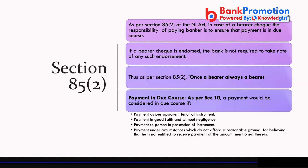As per Section 85 of the Negotiable Instruments Act, in the case of a bearer cheque, the responsibility of the paying banker is to ensure payment is made in due course — meaning there is no reason to believe the person taking money is not entitled to receive it. The banker must verify the cheque is not mutilated or fraudulent and the signature is correct. Payment in due course means payment as per the apparent tenor of the instrument, in good faith and without negligence.